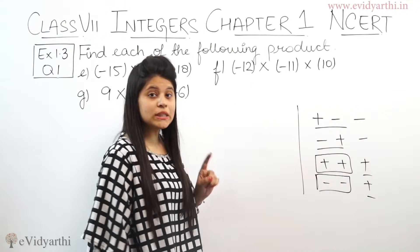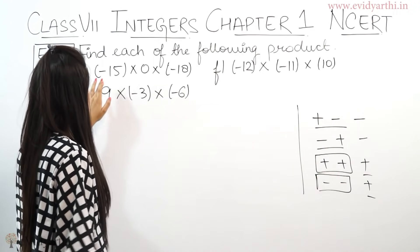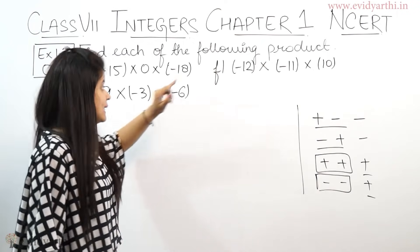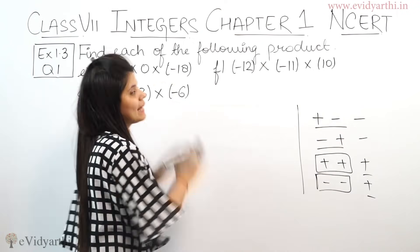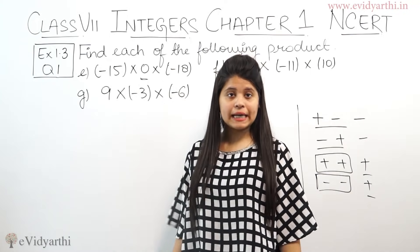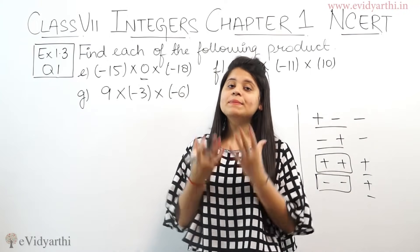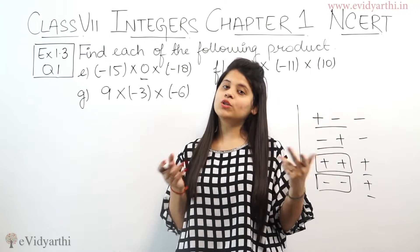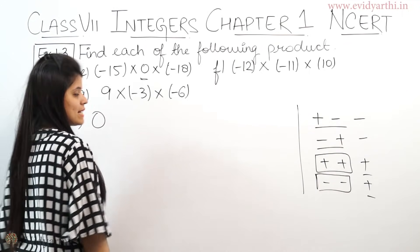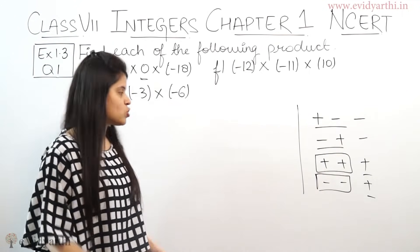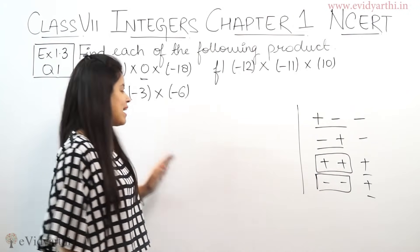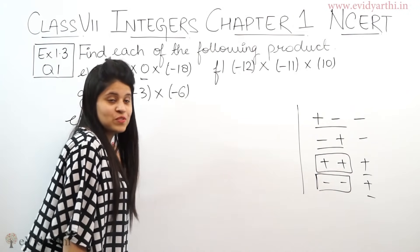Now coming to Part E: minus 15 × 0 × minus 18. We don't need a big calculation here because we can see a simple zero. Any number multiplied by 0 gives 0. So the answer for Part E is directly 0 — no need to check plus or minus, because minus 0 is nothing. So the answer is 0.